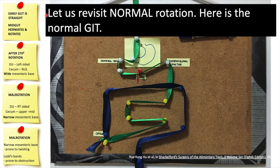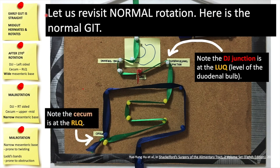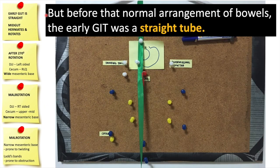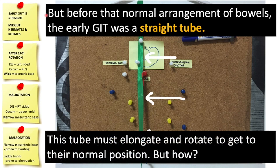Let us revisit normal rotation. Here is a normal GIT — the DJ junction is at the left upper quadrant at the level of the duodenal bulb. Note that the cecum is at the right lower quadrant. Before that normal arrangement of bowels, the early GIT was a straight tube. This tube must then elongate and rotate to get to their normal positions.